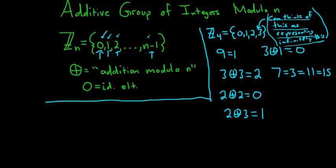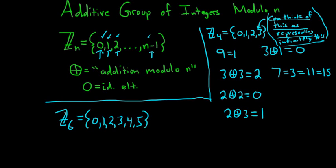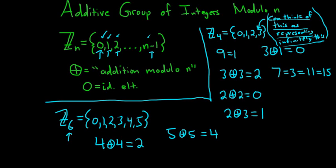Let's look at one more example with Z sub 6, which is 0, 1, 2, 3, 4, 5. Let's do 4 circle plus 4: that's 8, and 6 goes into 8 one time with remainder 2, so the result is 2. How about 5 circle plus 5: that's 10, and 6 goes into 10 one time with remainder 4, so the result is 4.